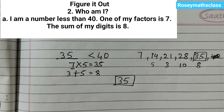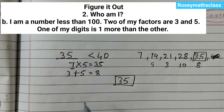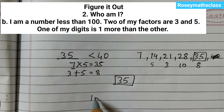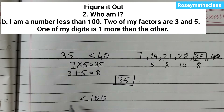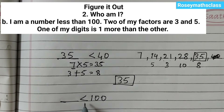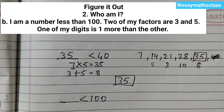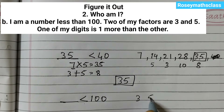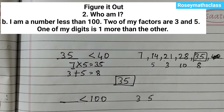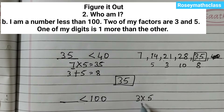The next part of the question: I am a number less than 100. Two of my factors are 3 and 5. So 3 and 5 are the factors of that number, which means 3×5=15 is also a factor. So we will write the multiples of 15.